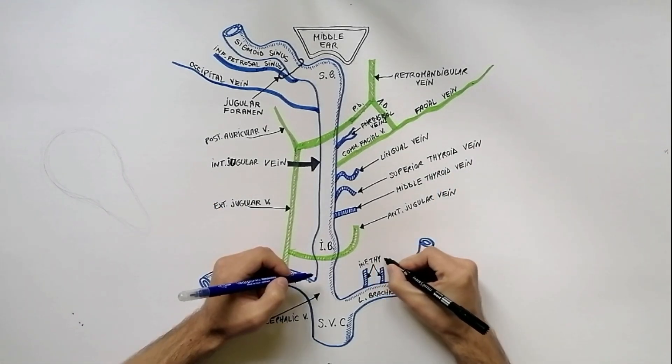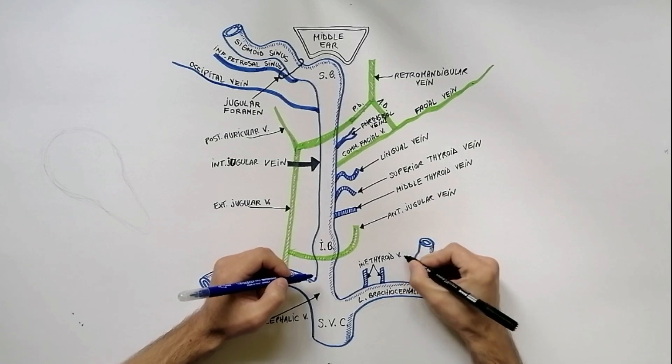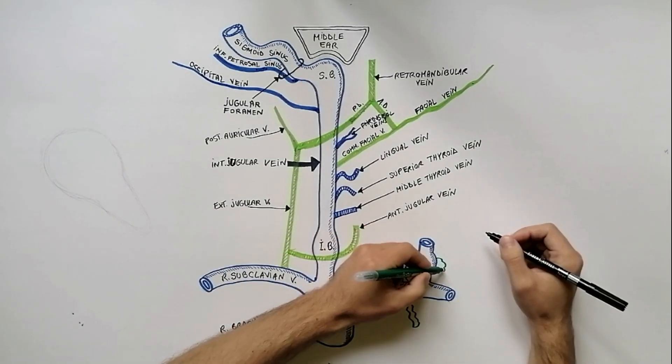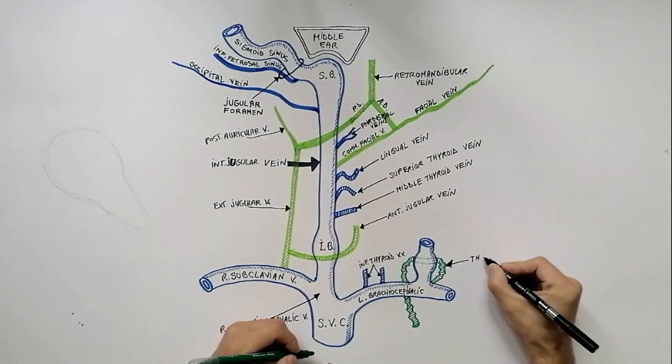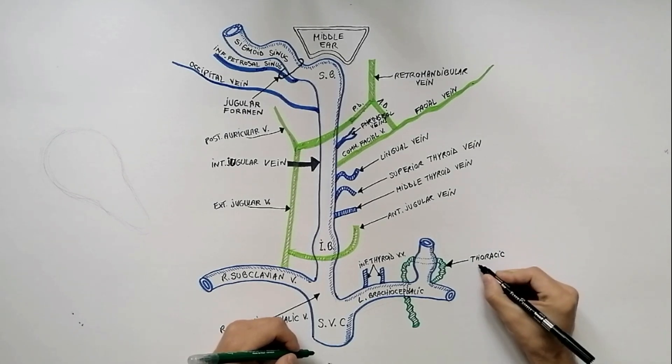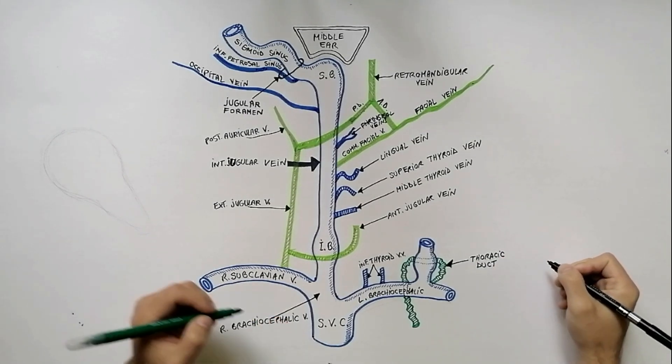The inferior thyroid veins drain into the left brachiocephalic vein. On the left side, the thoracic duct drains to the junction of the left subclavian vein and left internal jugular vein.